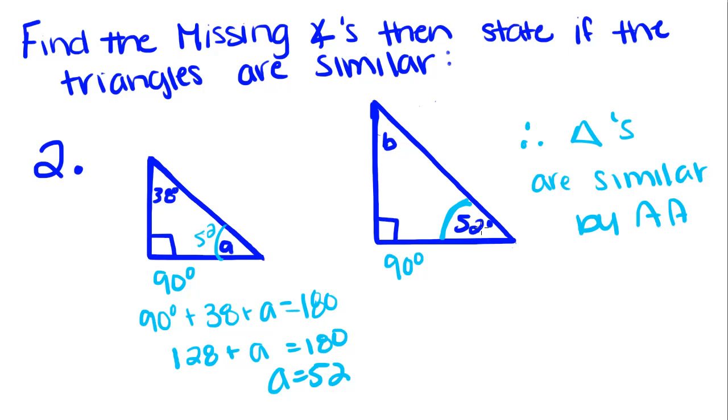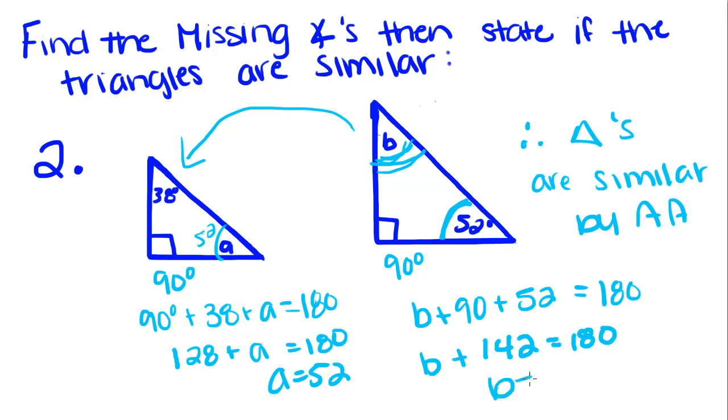But we're going to check this one just for some extra practice, because it should be congruent to this one, so B plus 90 plus 52 is equal to 180, B plus 142 equals 180. If you subtract this over, you get B equals 38.